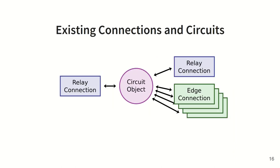In Tor's current architecture, the relationship between connections and circuits looks like this. Each circuit can be linked to a forward and backward relay connection, and to many edge connections. Circuit and connection objects hold circular references to each other, which makes it difficult to distribute these objects among threads. Instead, we need to remove these circular references and allow for asynchronous communication between these objects.